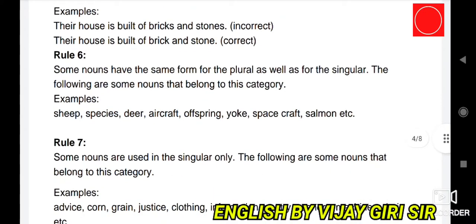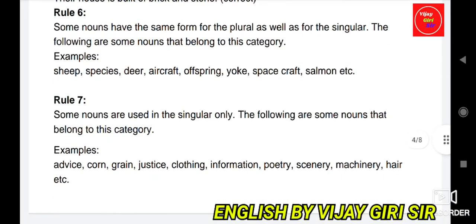Rule 6: Some nouns have the same form for plural as well as singular. The following nouns belong to this category: sheep, species, deer, aircraft, offspring, yoke, spacecraft, craft, salmon. These nouns remain the same in both singular and plural form.